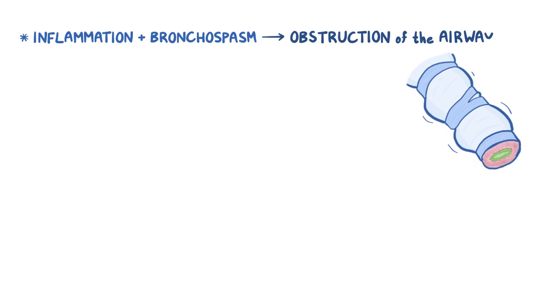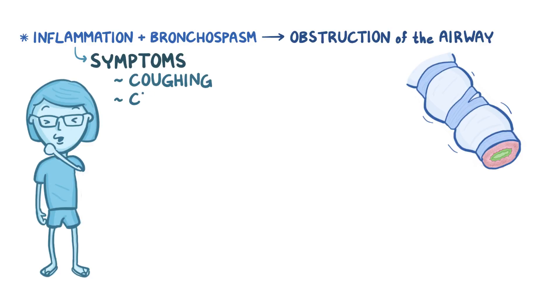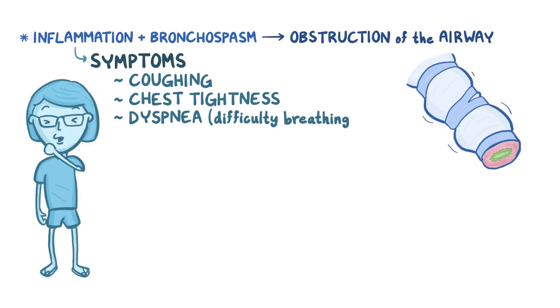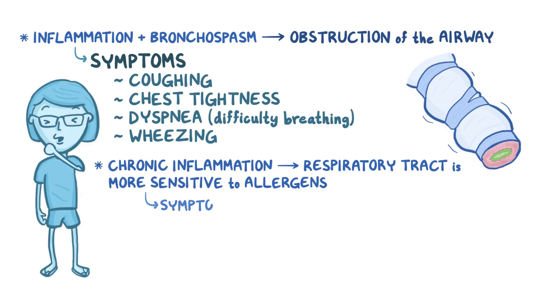These mediators also increase the vascular permeability in the airways and attract more immune cells to the area. The combination of inflammation and bronchospasm causes obstruction of the airway, which leads to symptoms like coughing, chest tightness, dyspnea or difficulty breathing, and wheezing — a high-pitched whistling sound during exhalation. Chronic inflammation also makes the respiratory tract more sensitive to allergens, so these symptoms become easier to trigger.